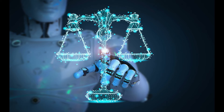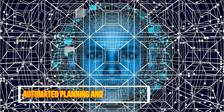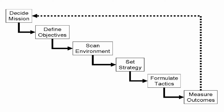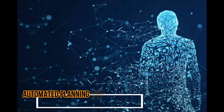Automated planning and scheduling, sometimes denoted as simply AI planning, is a branch of artificial intelligence that concerns the realization of strategies or action sequences, typically for execution by intelligent agents, autonomous robots, and unmanned vehicles.